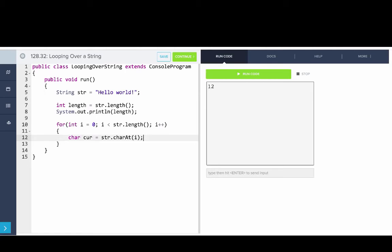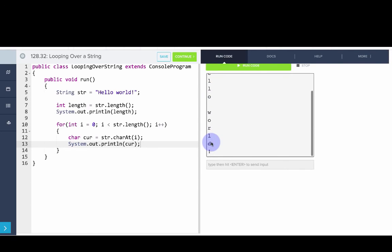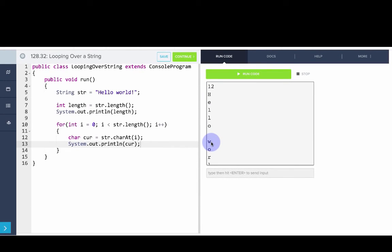So this means for every time we go through the for loop, we'll have a new value of i and we'll get the character at that index. And we'll say system dot out dot print line cur. So we'll run this code and we'll see that we print every single character on its own line. So this is a quick example on how we use some methods with strings.